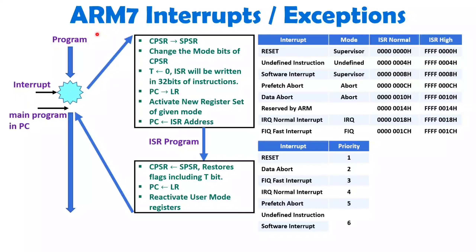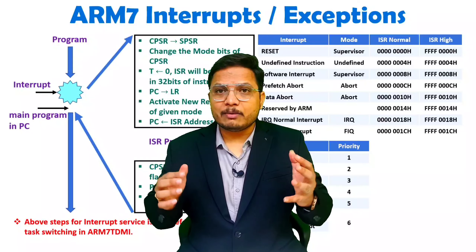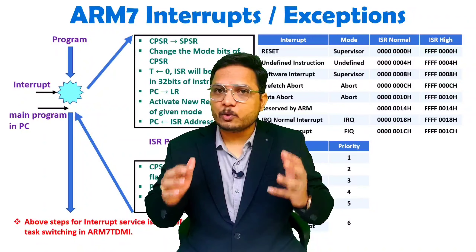I have seen many students confused, asking me to explain the steps of task switching in ARM7 TDMI. These are exactly the steps which are happening in task switching. We are operating with different tasks, and different tasks are assigned with different modes. So with ARM7 TDMI, task switching steps are these only. This is how ARM is providing the interrupt service routine.